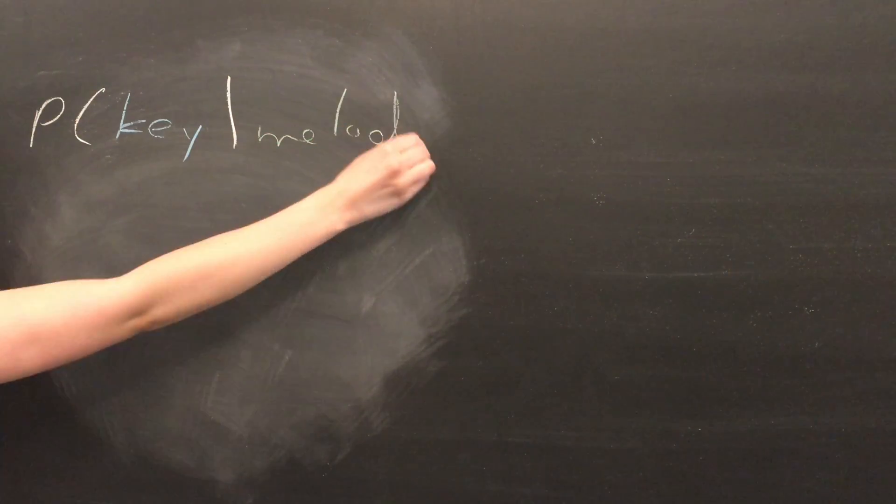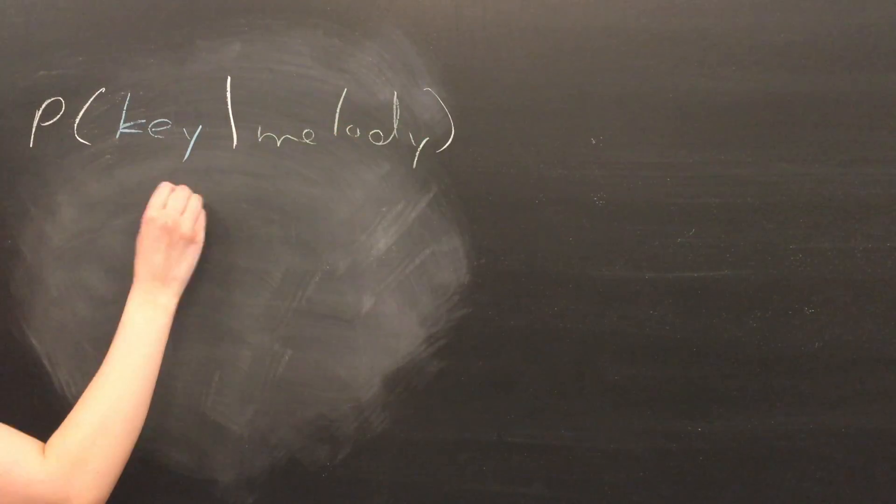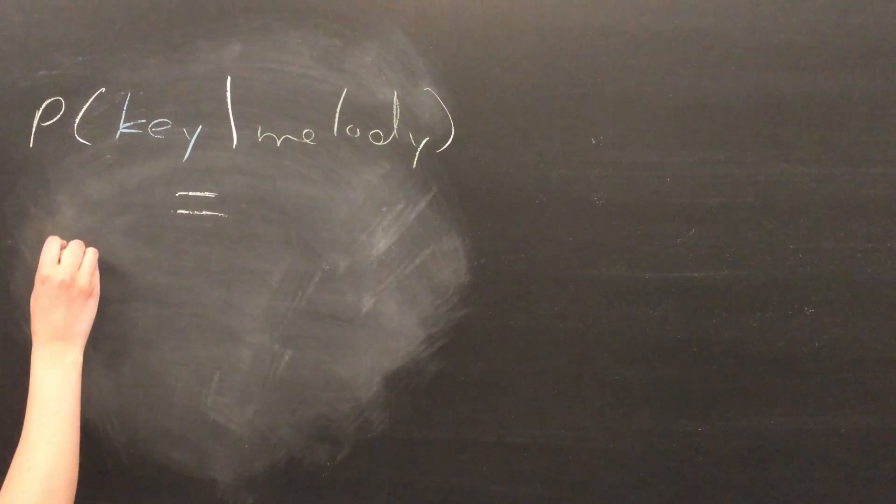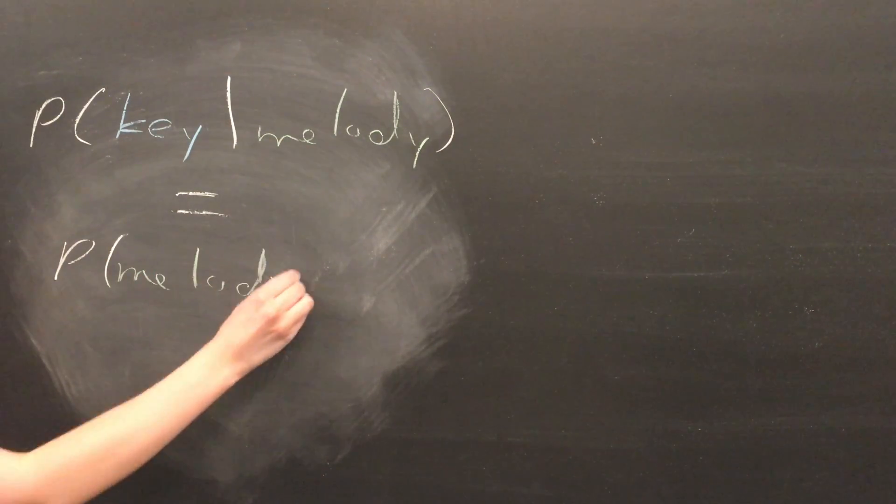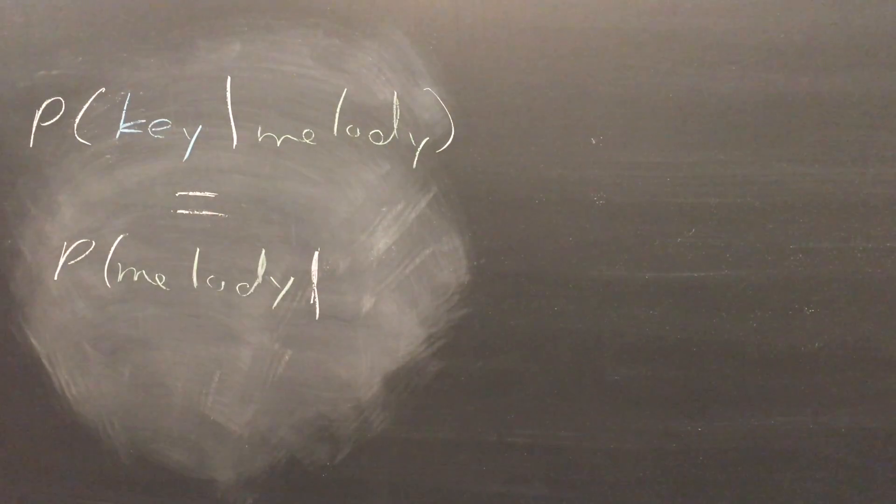Specifically, the probability of a certain key area given the notes in the melody is equal to the probability of the given melody in the given key times the probability of the piece being in that key, all divided by the probability of the given melody occurring altogether.